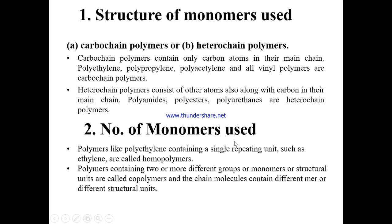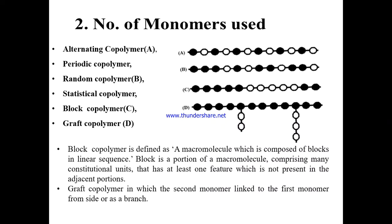Regarding the number of monomers used: polymers like polyethylene contain a single repeating unit — ethylene — so they are homopolymers. Polymers that contain two or more different monomers or structural units are called copolymers, and their chain molecules contain different structural units. Examples of copolymers include acrylic and modacrylic fibers.